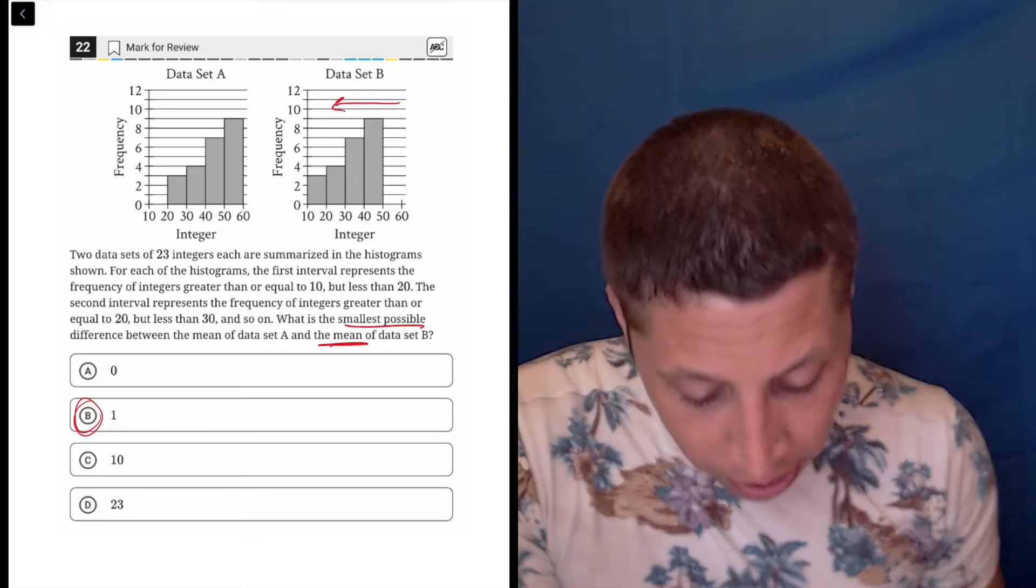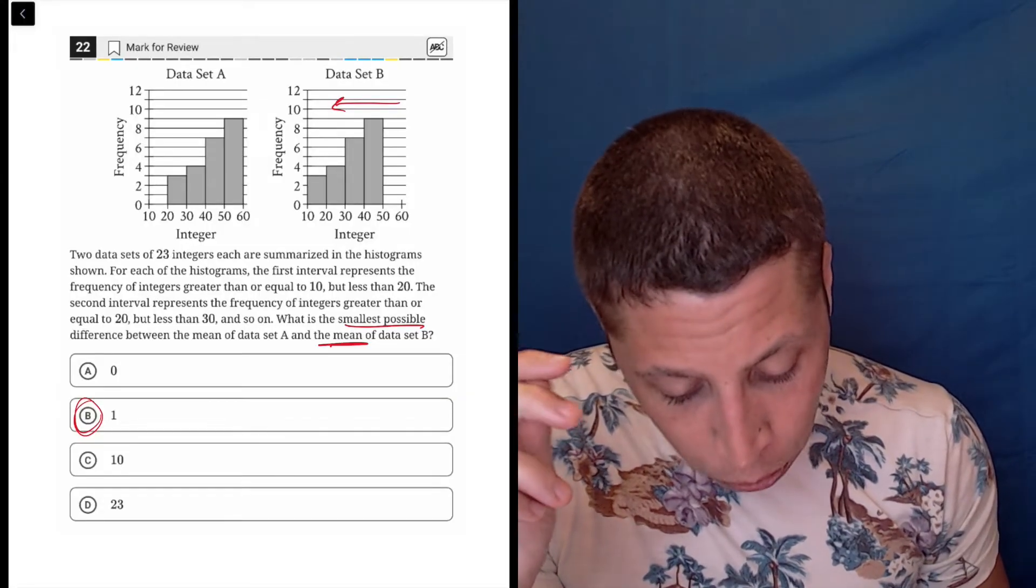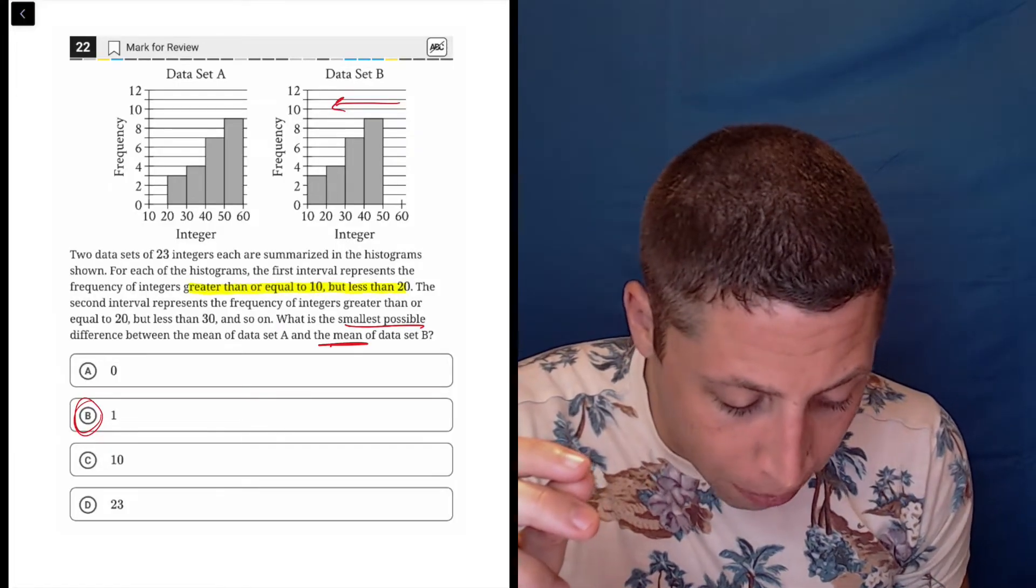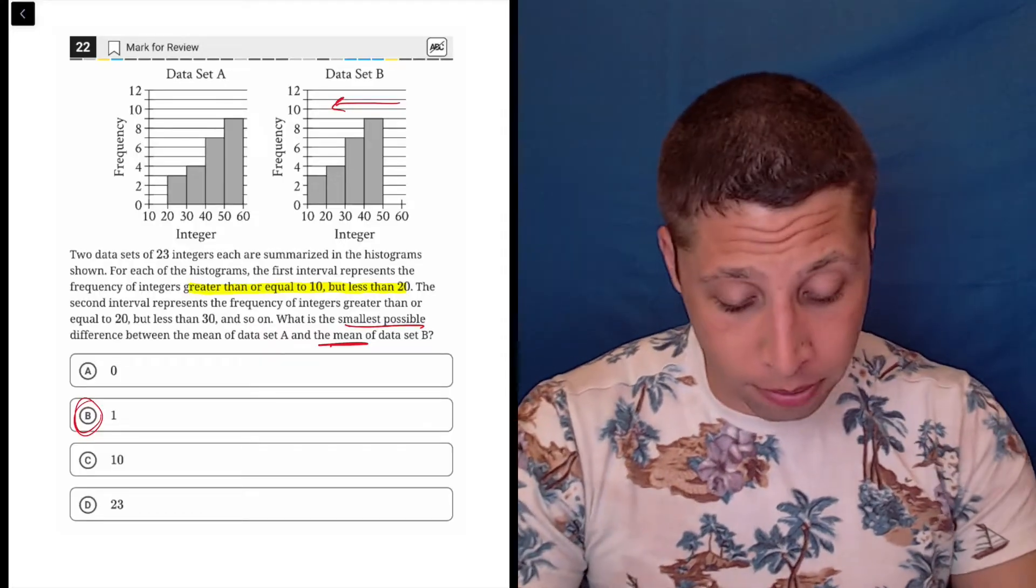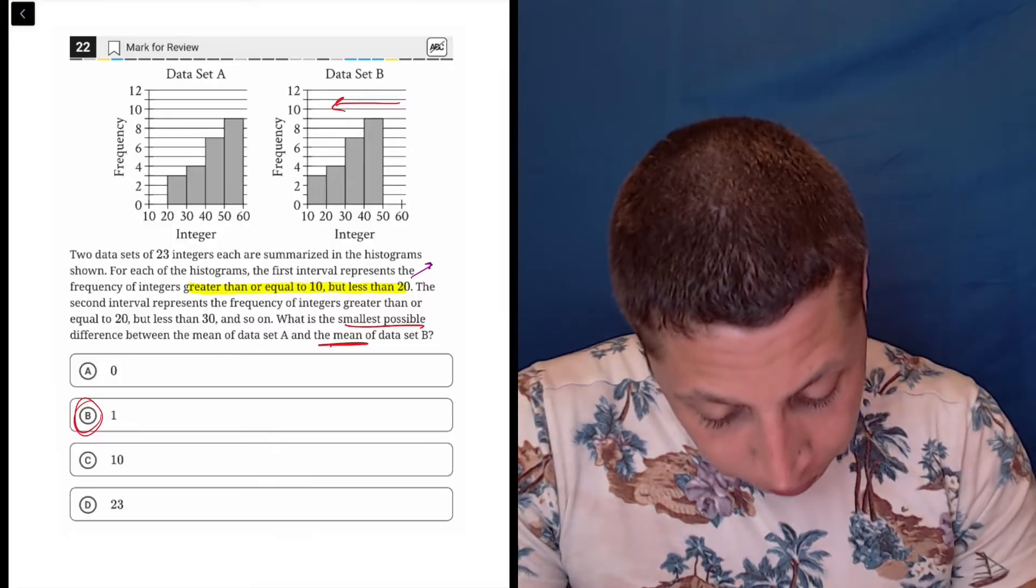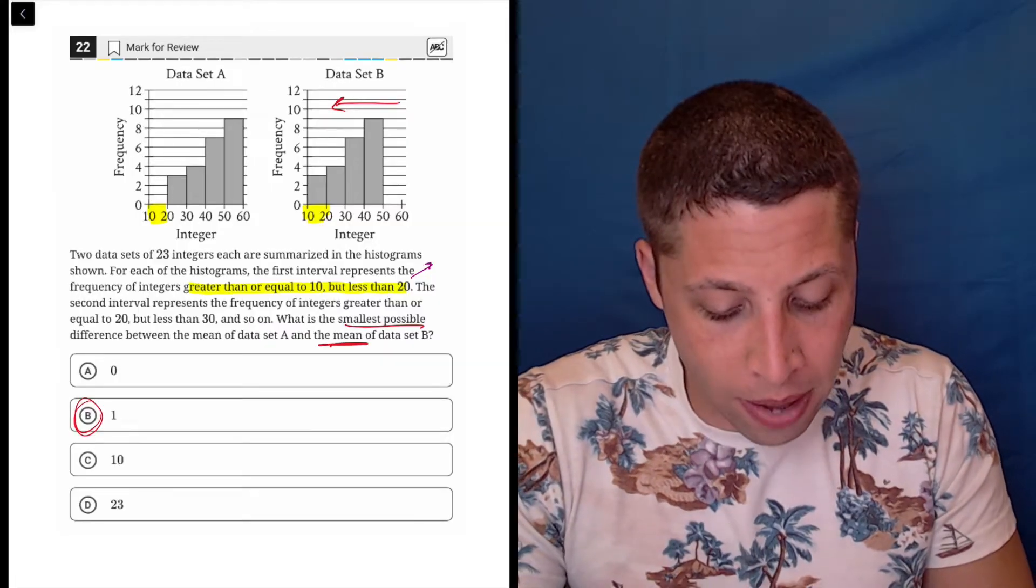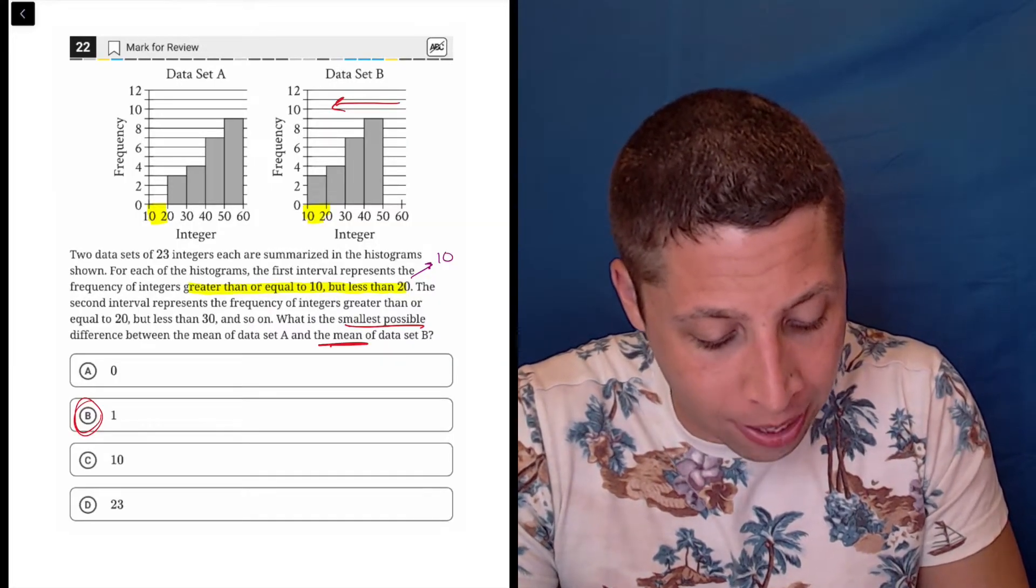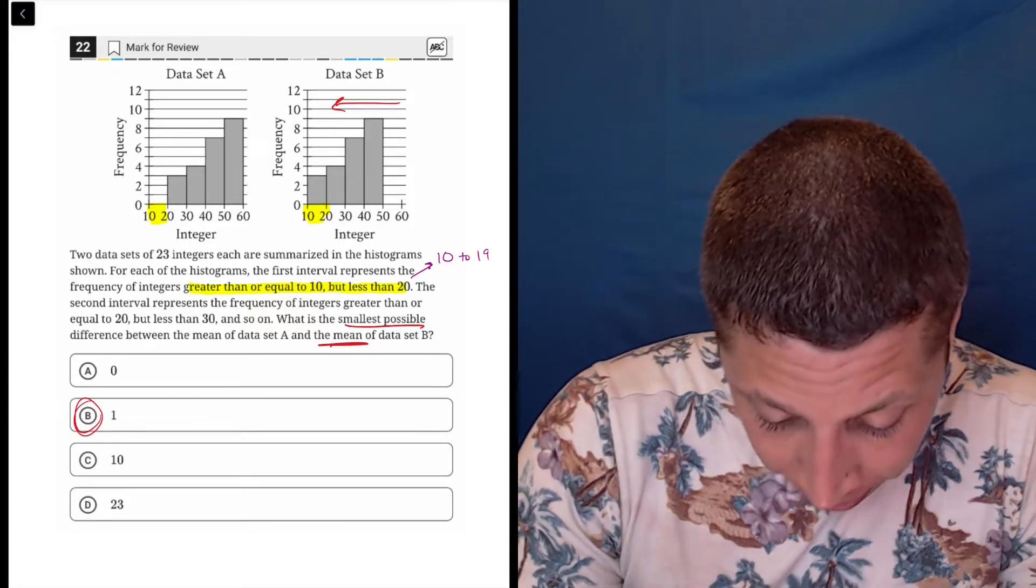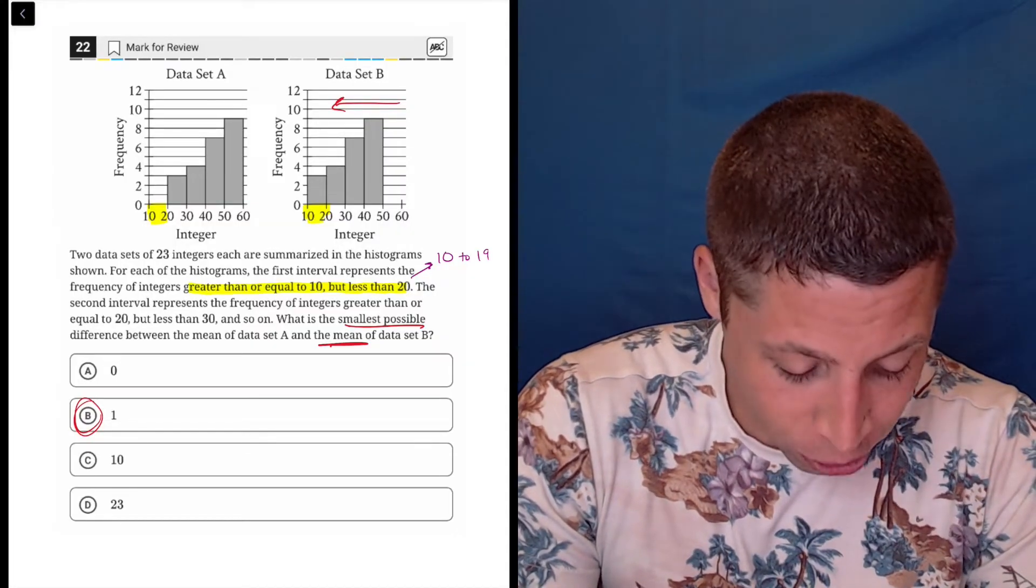So we've got these two data sets of 23 integers, so same number of data points. For each of the histograms, the first interval represents the frequency of integers greater than or equal to 10, but less than 20. And then they kind of repeat this along the line. So let's just be very clear about what that means. So this first interval here, in both graphs, represents the values that are between 10 and 19. They say integers, so we have that going first. It's not 19.9, but I guess it could be in another different version of the question.